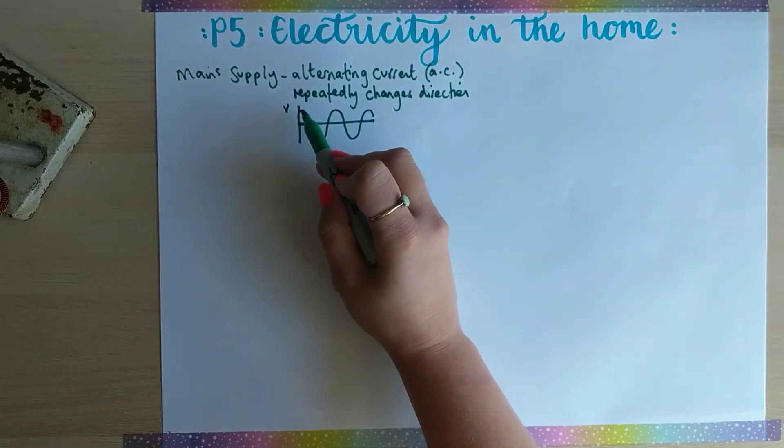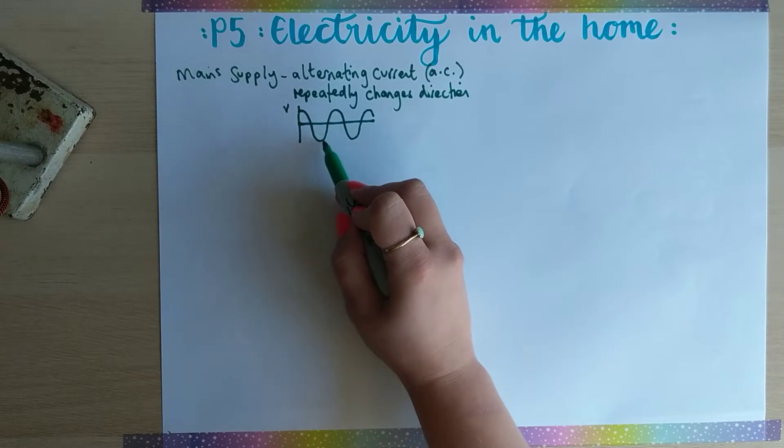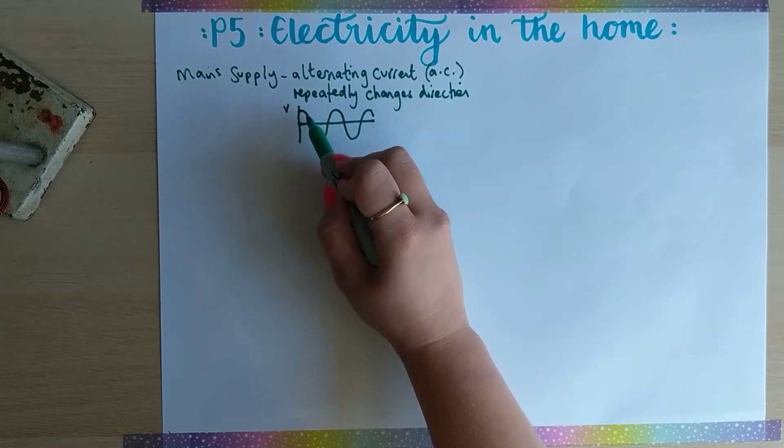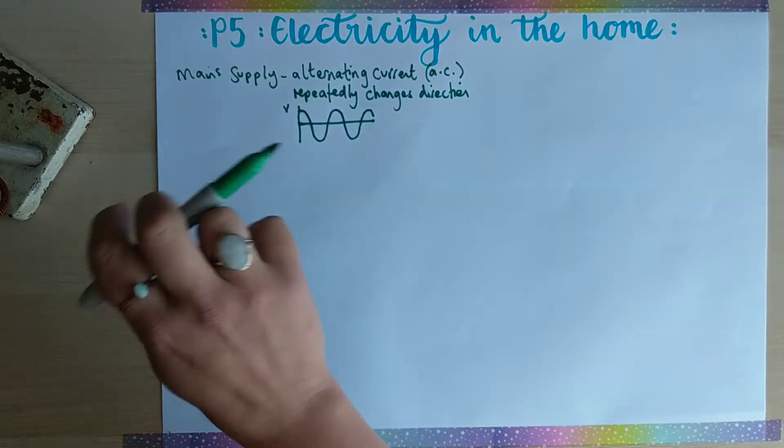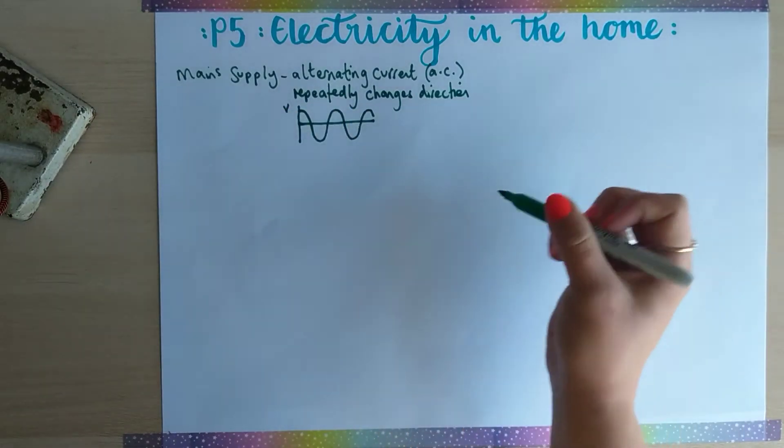So it goes from a maximum positive to a maximum negative, so it's always changing direction from going positive to negative to positive to negative, changing direction in the wires the whole time.